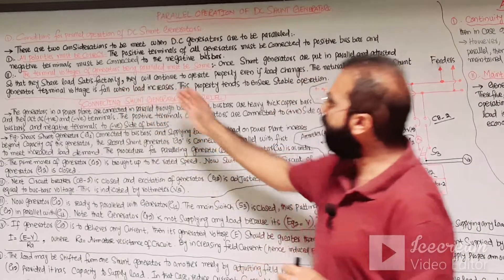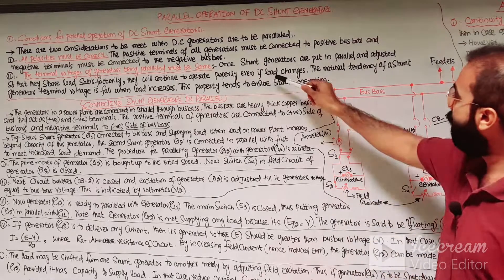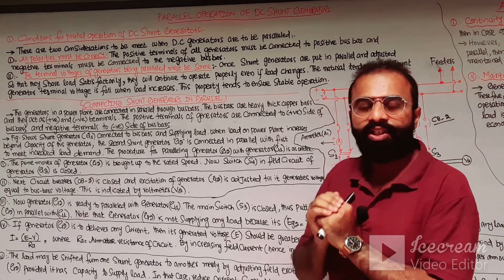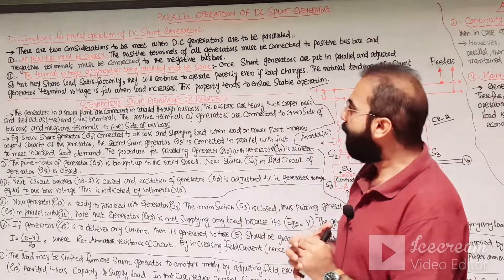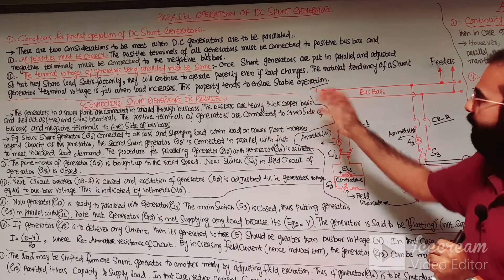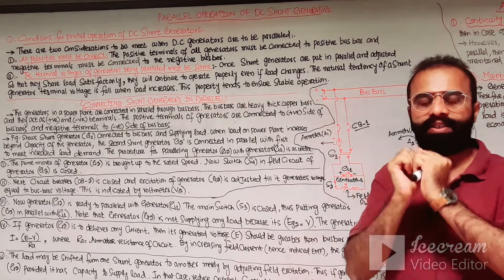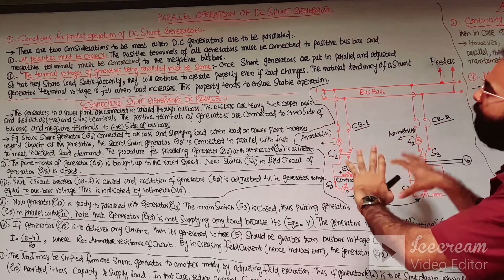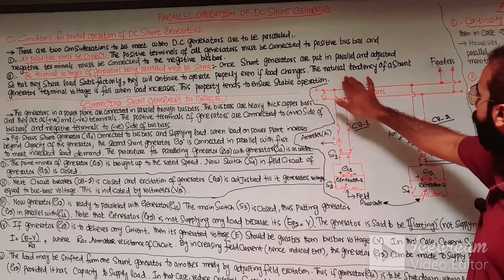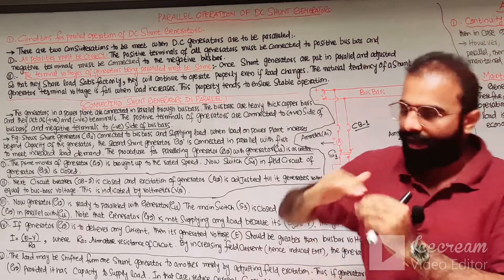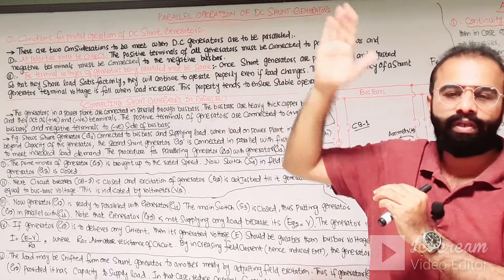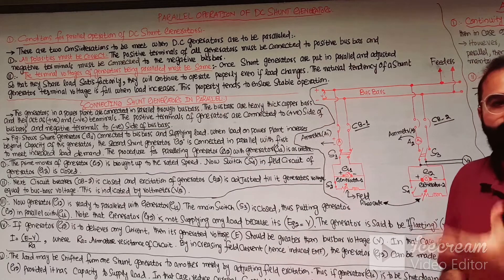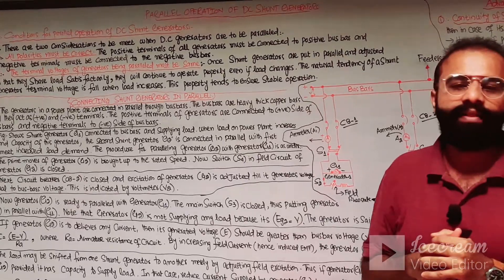The second condition is that the terminal voltages of the generators being paralleled must be the same. Once shunt generators are put in parallel with the bus bar and adjusted so that they can share the load satisfactorily, they will continue to operate properly even if the load changes. The natural tendency of the DC shunt generator is that when the load is increased, its terminal voltage and speed fall.